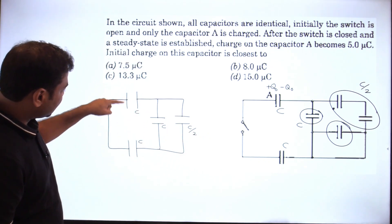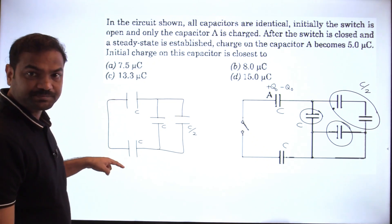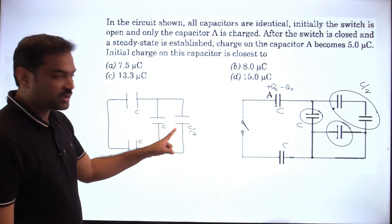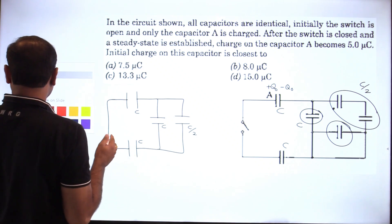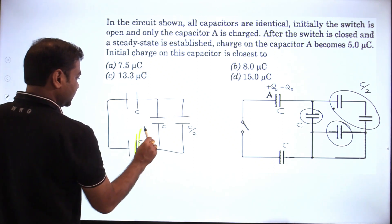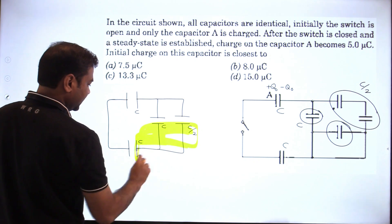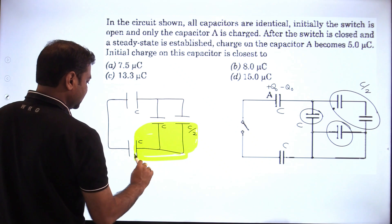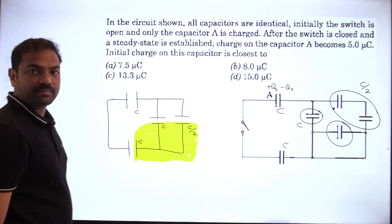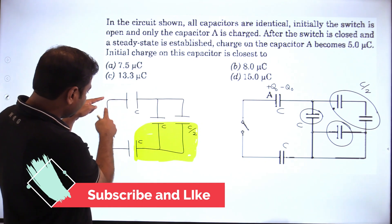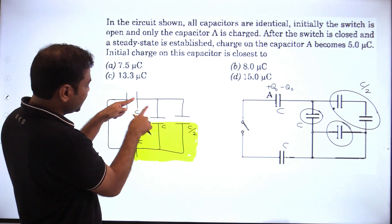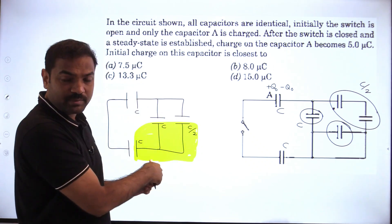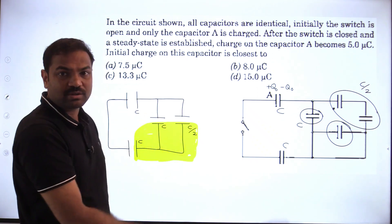When the switch is closed, the negative charge on this plate goes to these two plates — you get negative, negative, negative charge here, and these two plates get positive charges. These are isolated plates, so the net charge on this particular combination of plates has to be zero always. The positive charge on this plate can be shared with this plate, and the negative charge can be shared with these two plates. The total charge on these three plates has to be zero always.